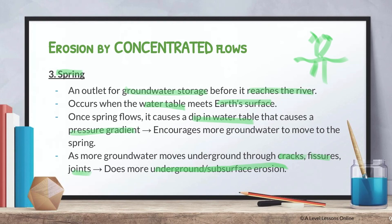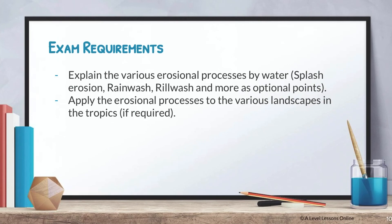For your exam, you need to be able to explain the various erosional processes by water — the main ones being splash erosion, rain wash, rill wash, and other processes like springs. Apply these processes to the various landscapes such as karst and aeolian landscapes, or to rivers in channel morphology and drainage basin hydrology. That's all for this part on erosion by water. Give it a like, subscribe, and leave any questions in the comments — see you in the next part on erosion by wind.